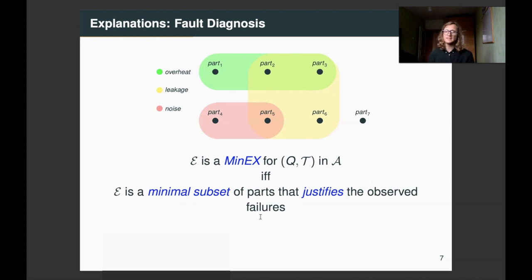So, by construction, we have it. E is a min-ex for ontology-mediated query, if and only if it corresponds to a minimal subset of parts that justifies the observed failures, explains them.